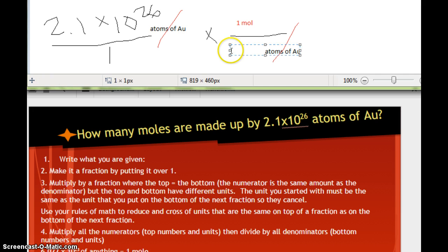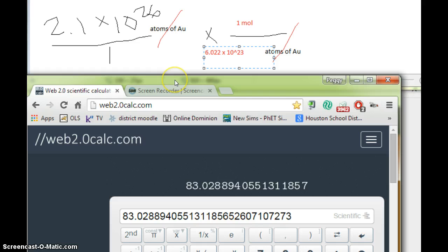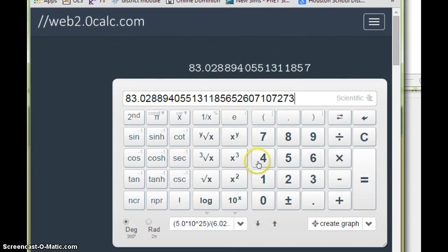And so how many atoms are in one mole? Well, it is always 6.022 times 10 to the 23rd. And so we're going to put that in our calculator. Alright, so now we're going to go ahead and put it into our calculator.